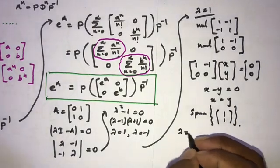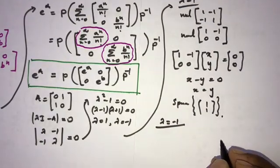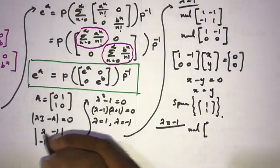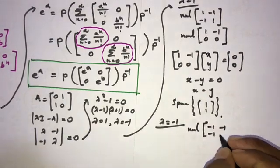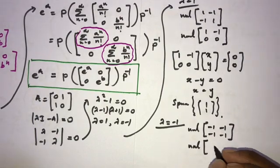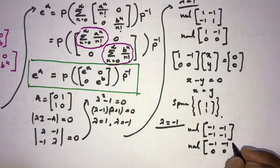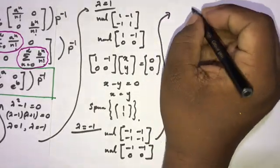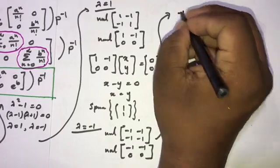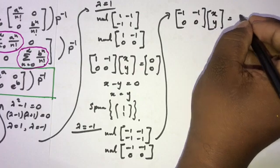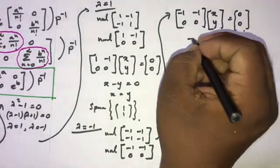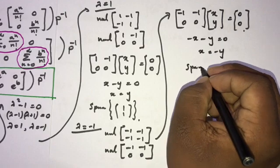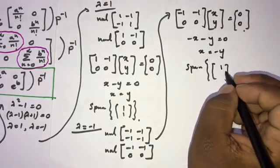When lambda equals minus 1, we compute the null space of (A plus I): the matrix [[-1, -1], [-1, -1]]. Row reducing gives [[-1, -1], [0, 0]], so minus x minus y equals 0, meaning x equals minus y. The eigenvector is the span of [1, -1].